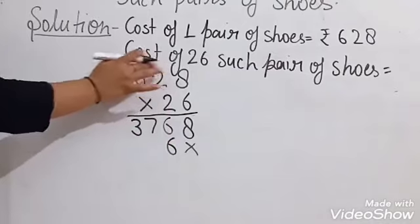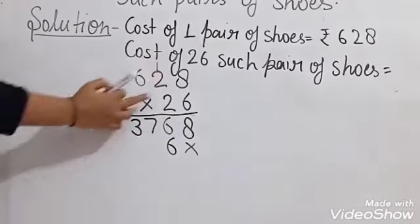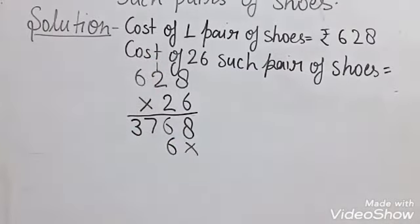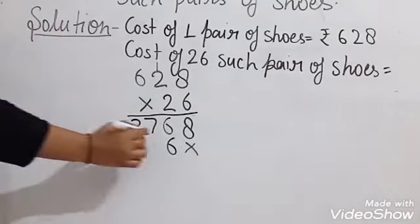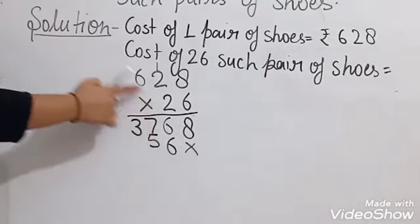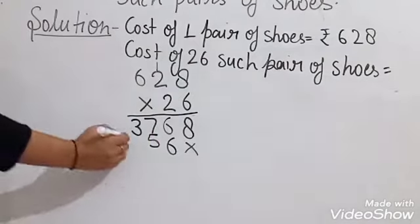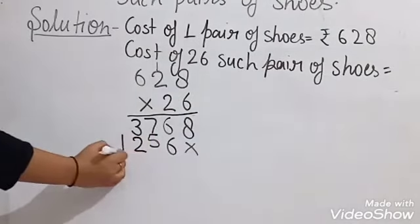2 times 8 is 16, write 6 and carry 1. 2 times 2 is 4, plus carry 1 equals 5. 2 times 6 is 12, write 12.